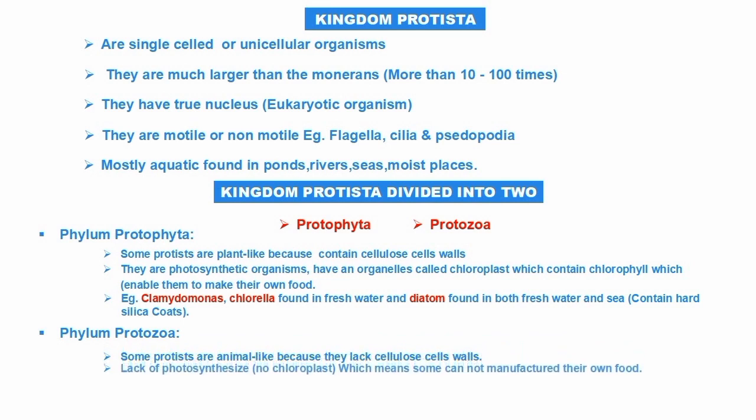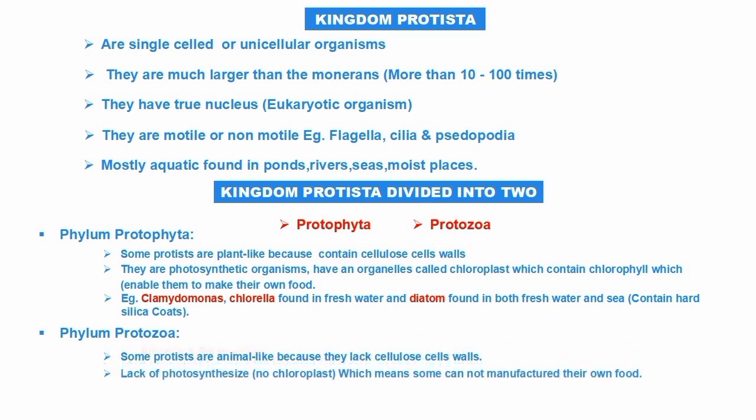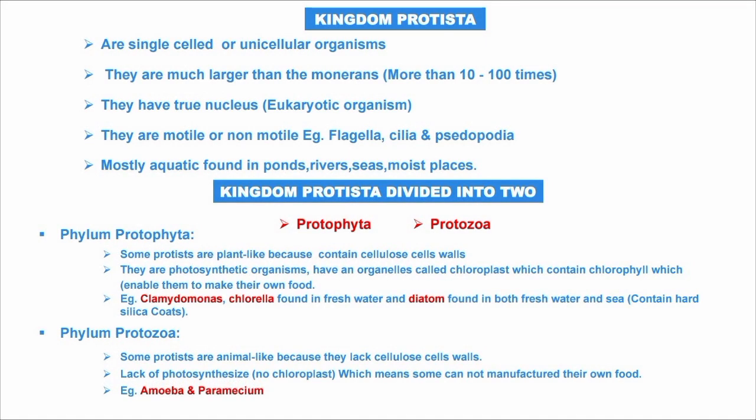Phylum Protozoa — some Protozoa are animal-like because they lack a cell wall. They resemble animals, lack photosynthesis, have no chloroplast, and therefore cannot manufacture their own food. They are heterotrophs.